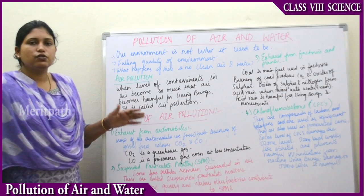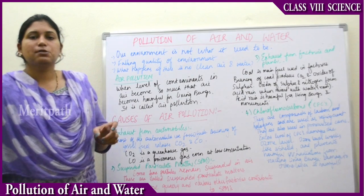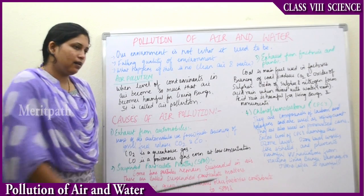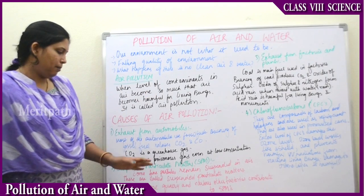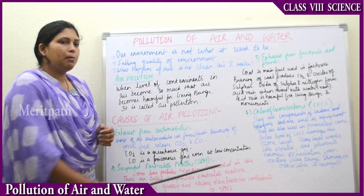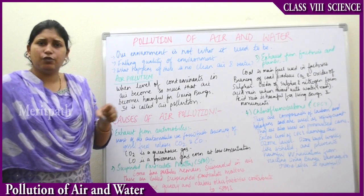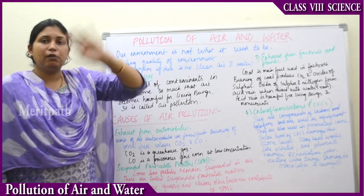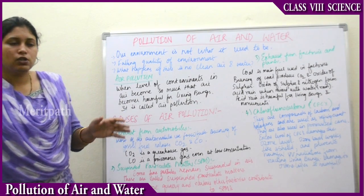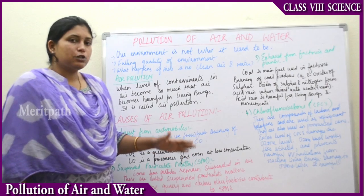The next cause is Suspended Particulate Matters, that is SPMs. Some fine particles remain suspended — that is, floating — in the air. These floating particles are called suspended particulate matters. For example, in stone quarries where stones are crushed into fine corners, there is a lot of dust floating in the air. Various other factories also contribute to suspended particulate matters — fine dust particles floating in the air.